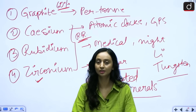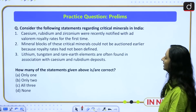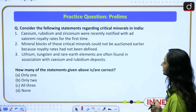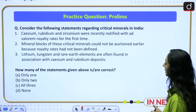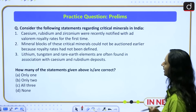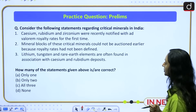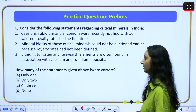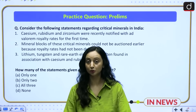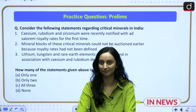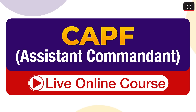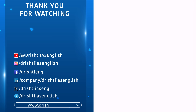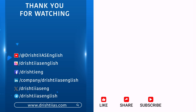That was today's analysis. Now let's look at a practice question for prelims. Consider the following statements regarding critical minerals in India: one, cesium, rubidium, and zirconium were recently notified with ad valorem royalty rates for the very first time; two, mineral blocks of these critical minerals could not be auctioned earlier because royalty rates had not been defined; three, lithium, tungsten, and rare earth elements are often found in association with cesium and rubidium deposits. How many statements are correct? Attempt this question and provide your answers in the comments. Thank you for watching and stay tuned to Drishti IAS. Like, share, subscribe, and press the bell icon for notifications.